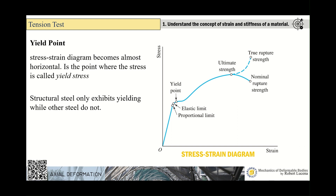Right after the elastic limit is the yield point, where the stress-strain diagram becomes almost horizontal. Just a little change in stress causes excessive deformation — a very low increase in stress produces a lot of strain. This is because the steel has yielded; a very small increase in stress causes it to deform excessively.